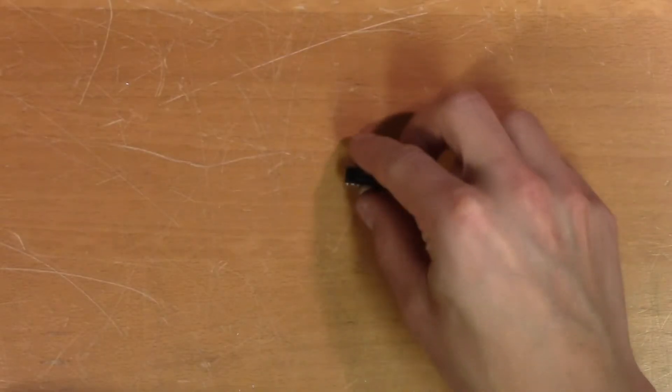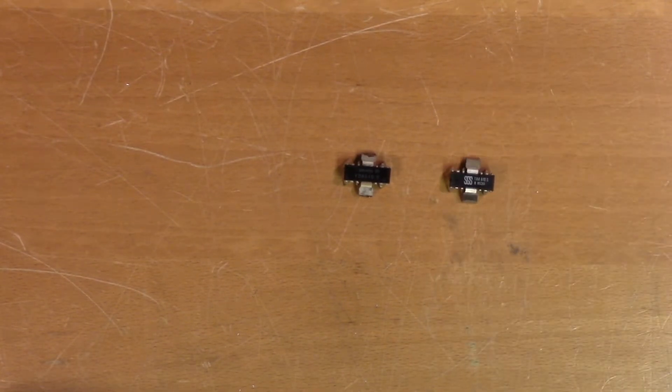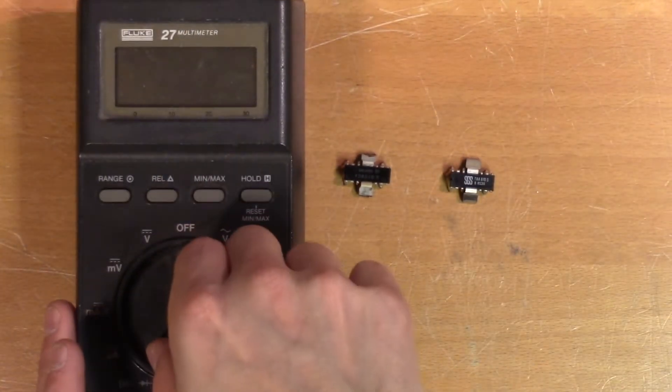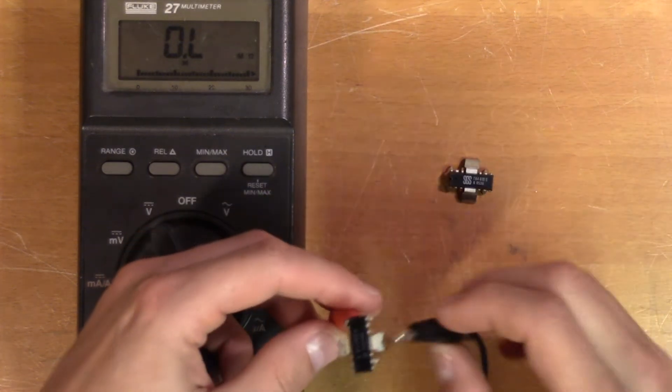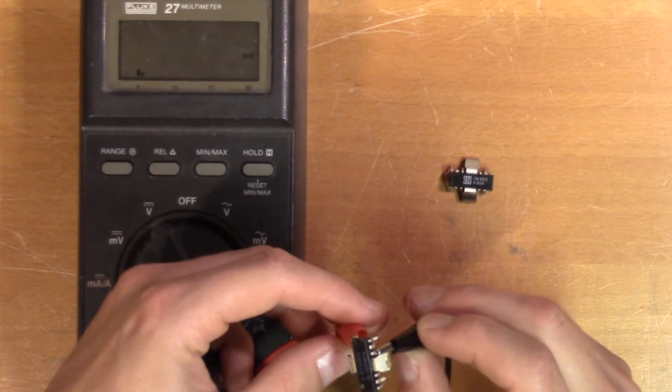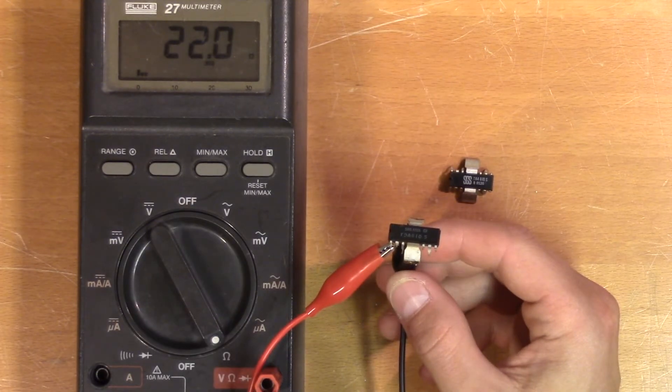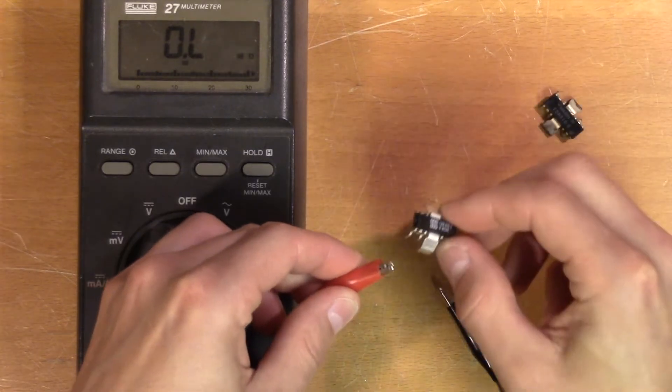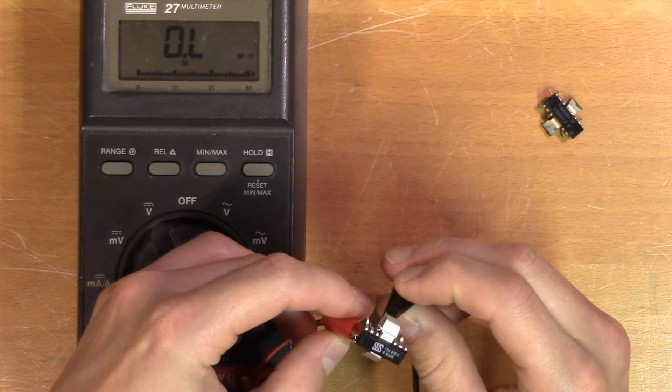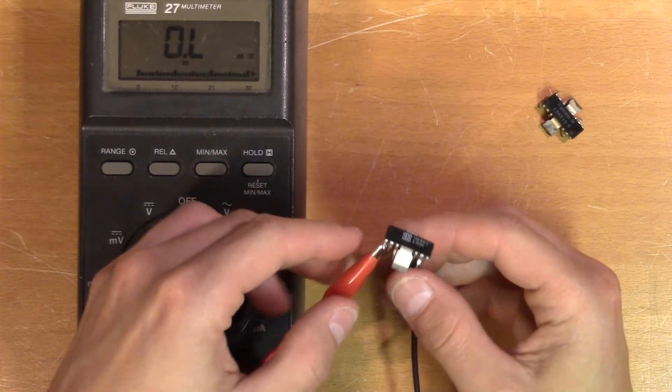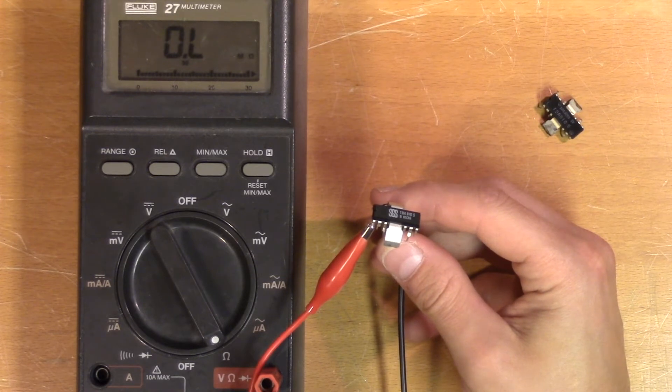So here we have the presumably broken power amplifier IC. And here we have a new one. Let's do some comparative measurements. On the old one we have 22 ohms between power rail and ground. And the new one shows an open circuit between power rail and ground, which is how it's probably supposed to be.